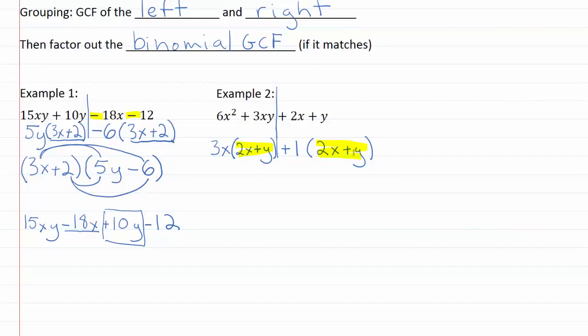So now the good news is that we have something matching on both sides here, 2x plus y and 2x plus y. So we can go ahead and pull that out, 2x plus y, put that in parentheses and then open up a new parentheses for what's left over. We've got 3x plus 1.